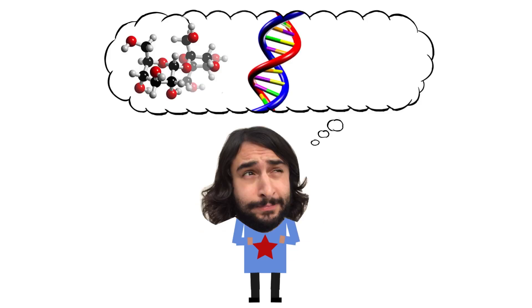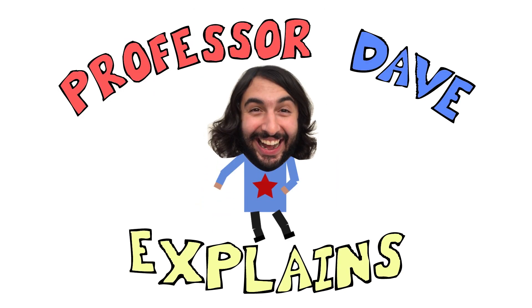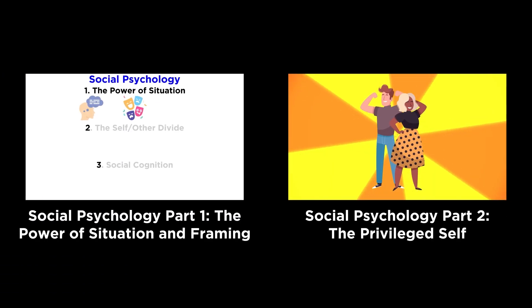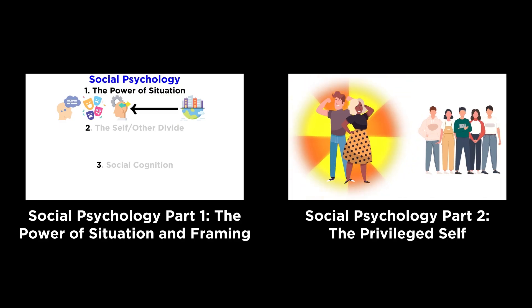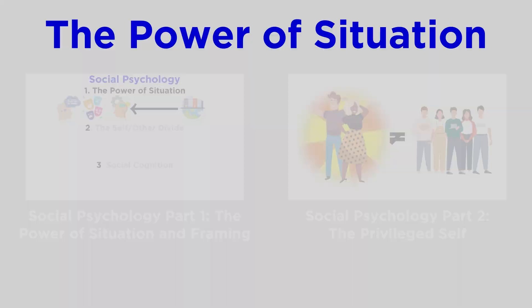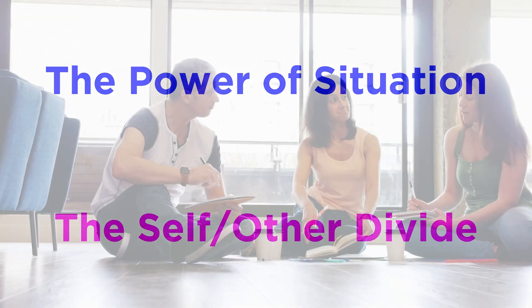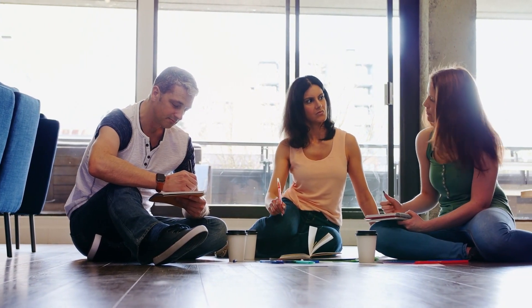Professor Dave explains. Over the last two tutorials, we've tackled two big topics in social psychology: the power of situation to shape our behavior, and how we think about ourselves. To wrap things up, we're going to look at one more large topic: how we think and interact with each other.